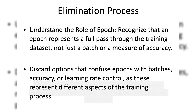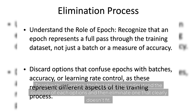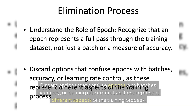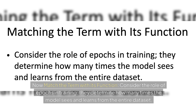To solve this question, the first step is to understand the purpose of each option and then eliminate those that clearly don't fit. Recognize that an epoch represents a full pass through the training dataset, not just a batch or a measure of accuracy. Discard options that confuse epochs with batches, accuracy, or learning rate control, as these represent different aspects of the training process. Consider the role of epochs in training: they determine how many times the model sees and learns from the entire dataset.